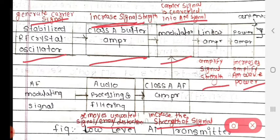Then the modulator — what is the function of the modulator? The carrier signal is converted into the amplitude modulated signal. Then the linear amplifier — its function is to amplify the signal strength. Then the power amplifier increases and amplifies the AM wave power.